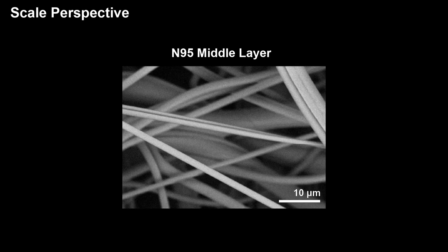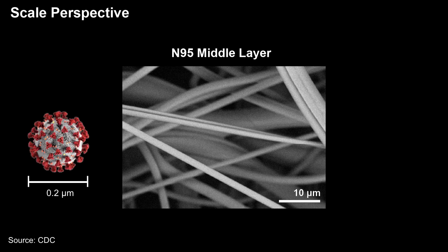You may be wondering how the feature size on the mask compares to the coronavirus. We know that the coronavirus is about 0.2 microns in size, and this is how it compares to a fiber on the N95 respirator. As you can see, the size of the coronavirus is about the size of the red dot — that is only one sixth of the fiber on the N95.